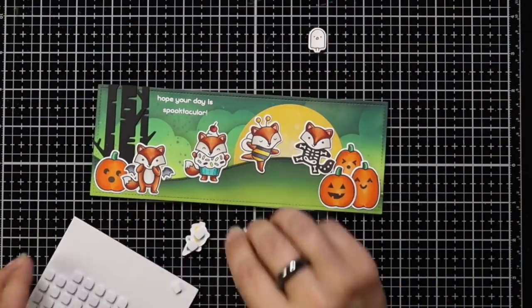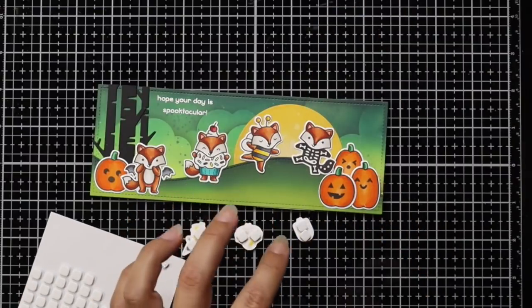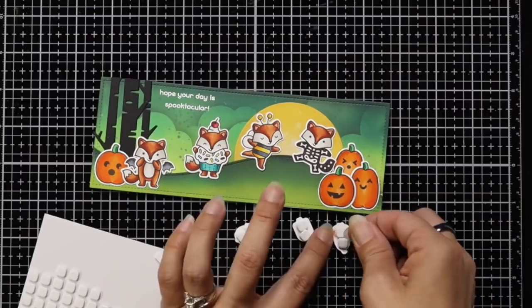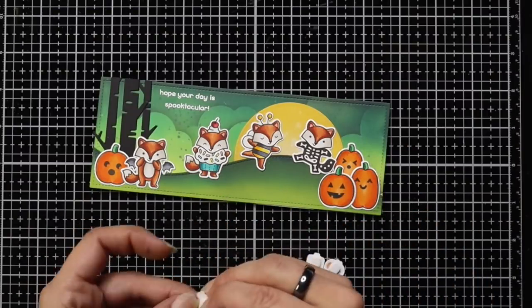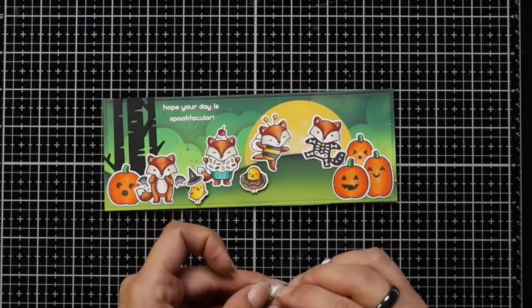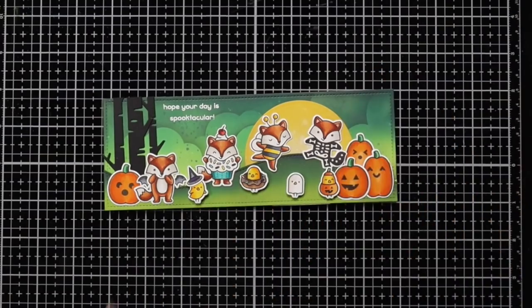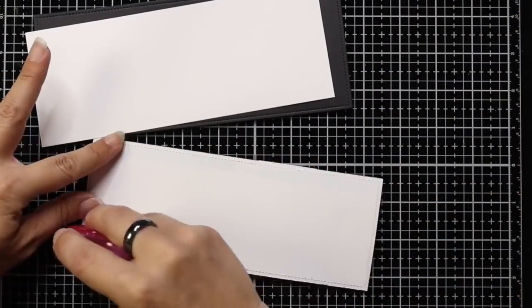Now all of the images are attached to the card base with a tape runner, except for the ones in the foremost front, which is the little chicks. So I'm adding really small foam squares to the back of those. And after I remove the backing of those foam squares, you can see I'm kind of staggering them up and down.